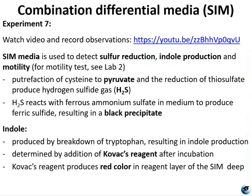The last experiment for lab 8 is the combination differential media, also called SIM media — SIM stands for sulfur indole motility. It's used for the determination of sulfur reduction, indole production from tryptophan hydrolysis, and motility. It is a semi-solid media that includes casein and animal tissue as sources of amino acids, iron, and sulfur in the form of sodium thiosulfate. Sulfur reduction to hydrogen sulfide can be accomplished by the enzymes cysteine desulfurase or thiosulfate reductase. Either reaction produces H₂S gas, which reacts with ferrous ammonium sulfate in the media to produce ferric sulfide, resulting in a black precipitate.